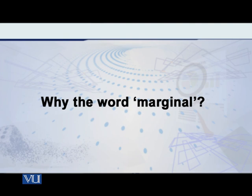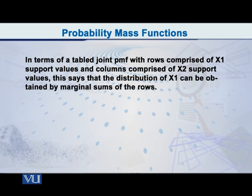Why the word 'marginal'? To understand this terminology, the example of discrete variables is very good, because you can then think about a table—a bivariate table, for example, if you have two discrete random variables.